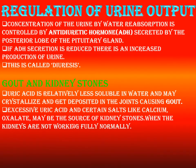Regulation of urine output is controlled by ADH — anti-diuretic hormone — secreted by the posterior lobe of the pituitary gland. If ADH secretion is less, there is increased production of urine; if ADH secretion is more, there is less production of urine. This condition is called diuresis.